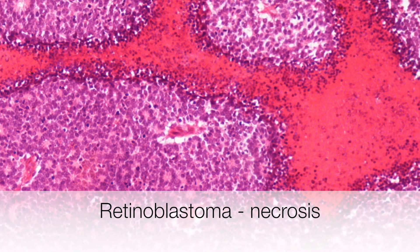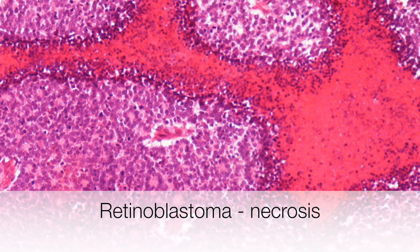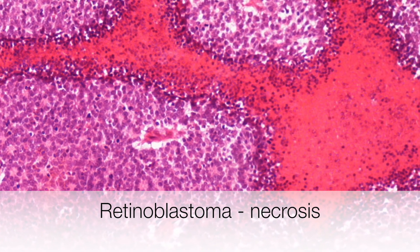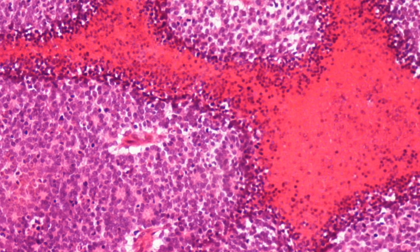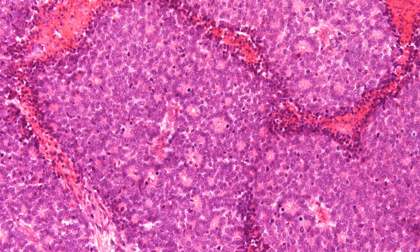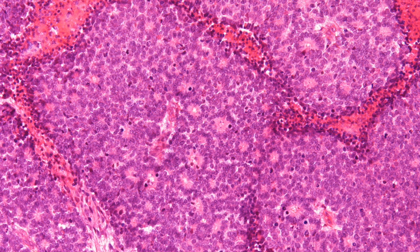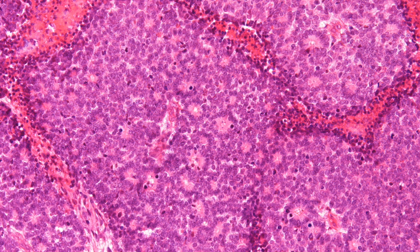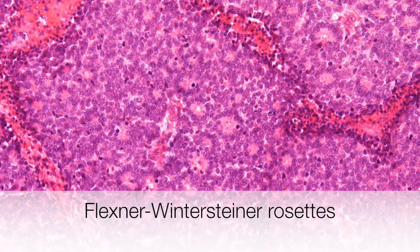One of the typical histological features of retinoblastoma is the areas of necrosis — these are the rather featureless areas staining an orangey-red colour. Here is another classical histological feature of retinoblastoma: the Flexner-Wintersteiner rosettes.